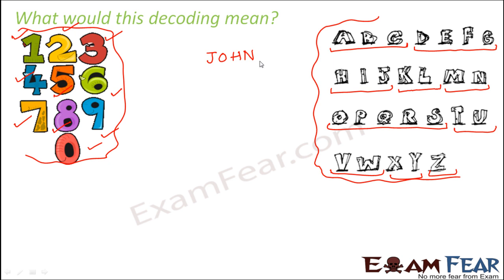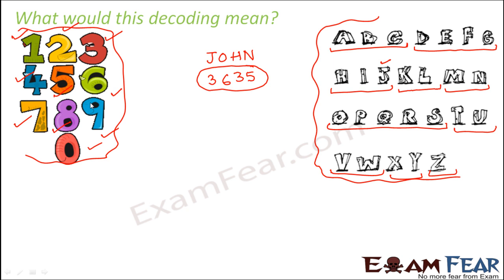So using that system, what would John be in terms of numbers? J is in the group that means three, so write three. O is in the O-to-S group, so it is six. H is in the K-I-J group, so that is again three. N is in the M-N group, so that is five. So John becomes 3635. If John is someone's password and you write 3635, not everybody will understand that 3635 means John — only those who know the coding mechanism. You have established a relationship between alphabets and numbers using a coding system.